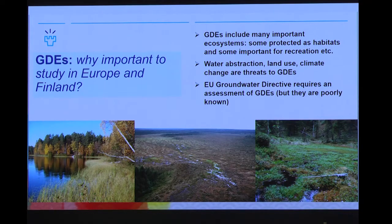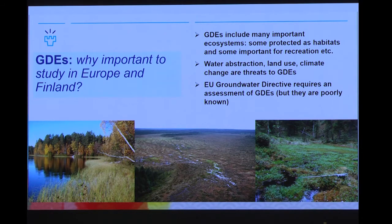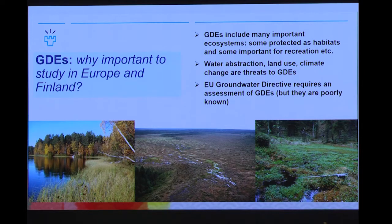Why are these systems important in Europe and Finland? Finland is a country of a thousand lakes, and actually peatlands and eskers. Some of these systems are really beautiful, and we have a lot of summer houses located on these crystal-clear groundwater lakes. The clearer the water, the higher social and economic value they have in Finland. Most of these systems are groundwater dependent. A lot of our protected sites in Finland are peatlands — they host different types of red-listed species, have high biodiversity, and are protected under the European Habitat Directive.